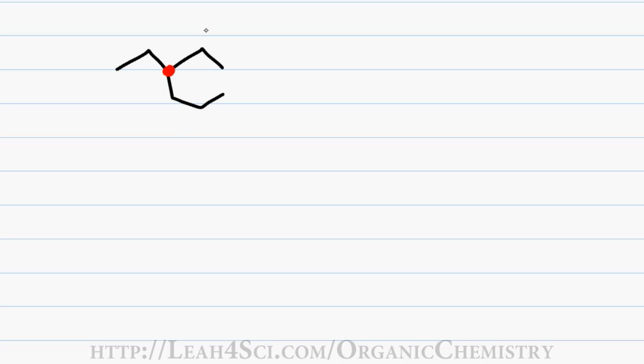Notice that to the right I have 2, to the left I have 2, but going down I have 3. This tells me that my parent chain has to include the branch going down and since I have 2 to the right and to the left, I can arbitrarily choose 1 for the longest carbon chain.